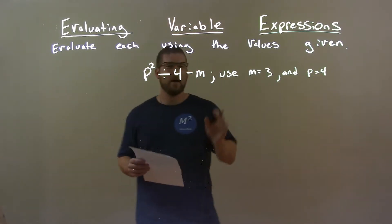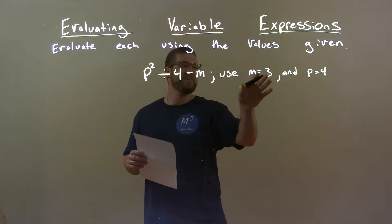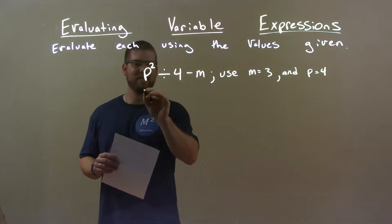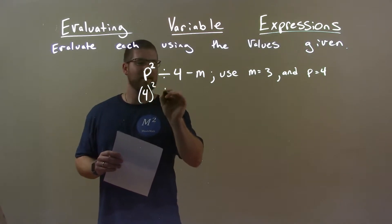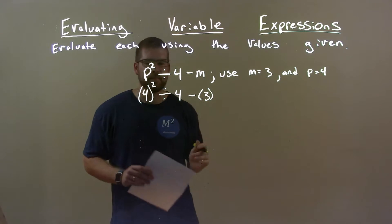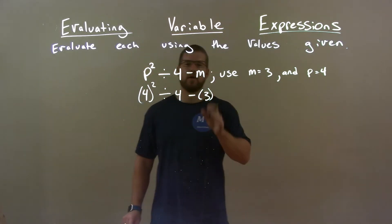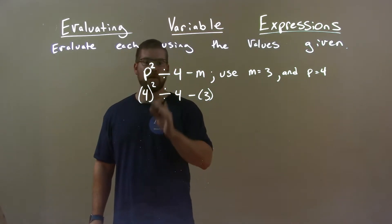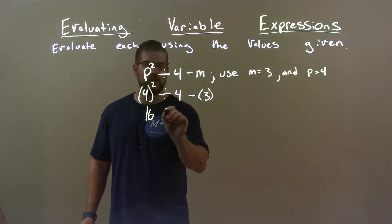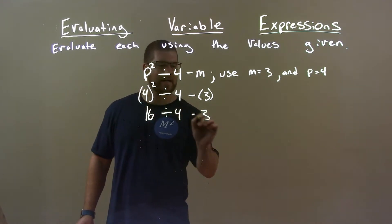So, if I, well first then, plug in our variables, m for 3 and p is 4, right? So, 4 squared divided by 4 minus m 3. Now, order of operations here are key. Exponents are the first step. 4 squared, 16. 16 divided by 4 minus 3.